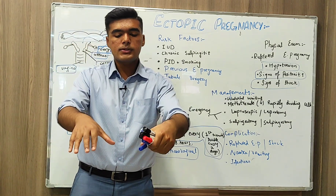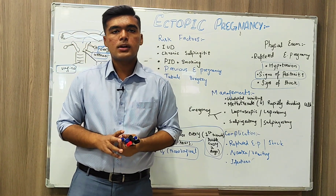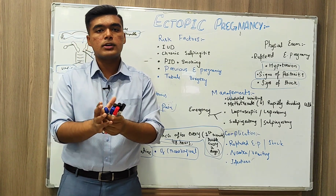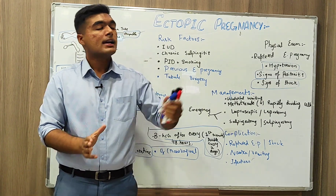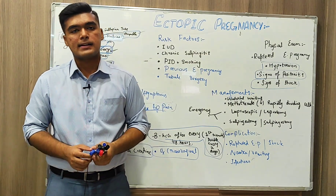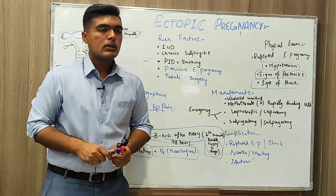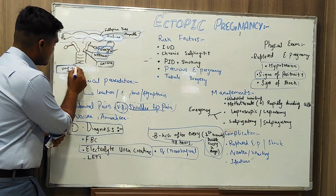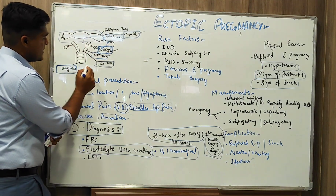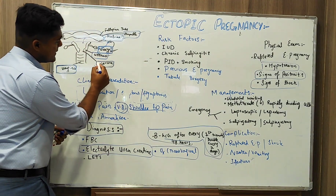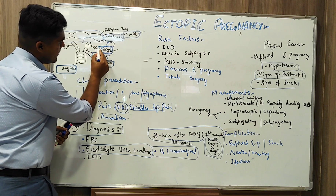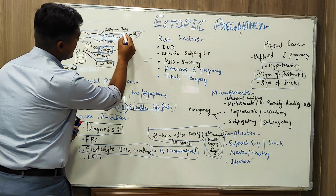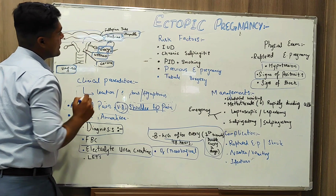Before going into the roots of this topic, we have to know a few structural points about the female reproductive tract and how ectopic pregnancy occurs. For that, I will draw a few structures. Here we have the vagina, cervix, uterus, ovary, fallopian tube, and its parts — fimbria and ampulla.